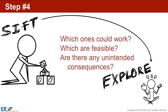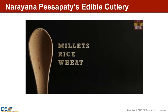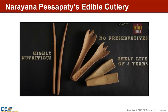If you sift through your ideas and can't find one that works, you might need to generate more ideas. Narayana decided on an edible spoon made of various grains. When you finish eating, you can eat your spoon, but if you throw it out, it will decompose in four to five days. This edible cutlery would be highly nutritious if you decide to eat it, and it could keep in a store or your cabinet for three years before you had to use it.